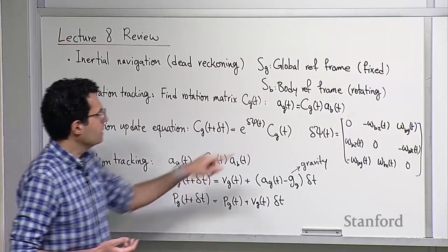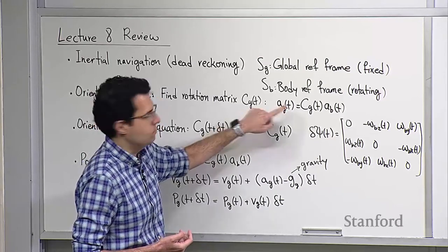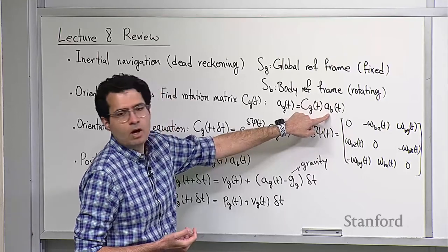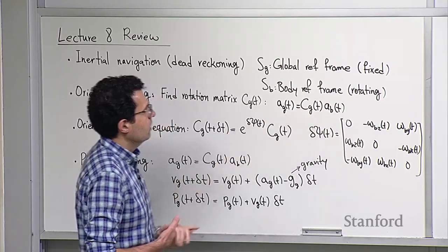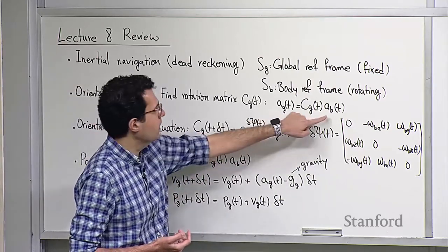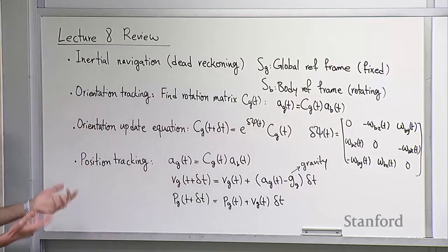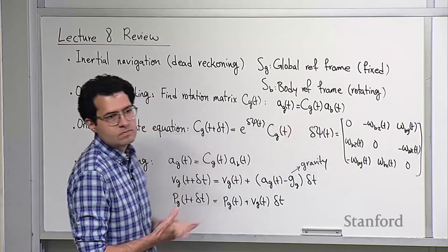For everyday robotics, you're almost always working with strapped-down IMUs. The first step is orientation tracking — we need to find a rotation matrix C_G(t), a time-varying 3D rotation matrix that maps your body reference frame to the global frame. Any acceleration measurement from your IMU coming in the body reference frame is multiplied by rotation matrix C_G to take it to the global frame. So the first step is to find this matrix, using gyroscope measurements to track C_G.